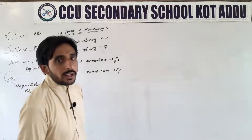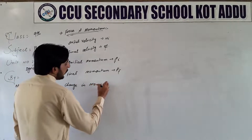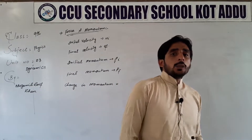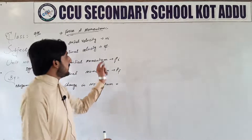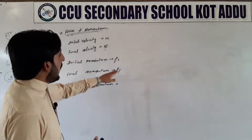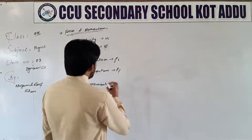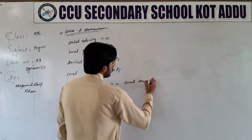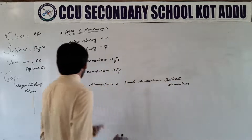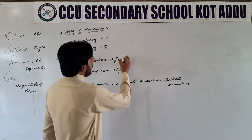Now we have to look at the change in momentum. Change in momentum — how does this change? Change in momentum is: final momentum minus initial momentum. Change in momentum, that is pf minus pi. Final momentum minus initial momentum. Ab yeh cheez clear hai — change in momentum that is pf minus pi.